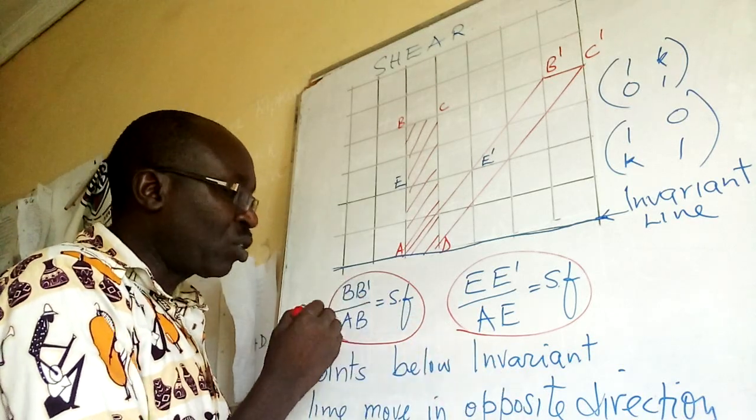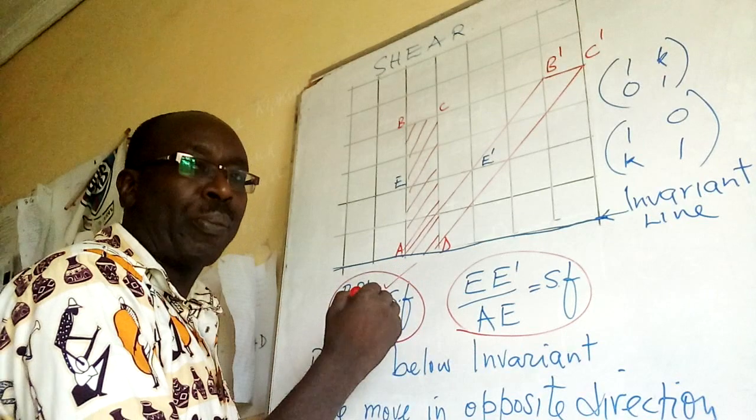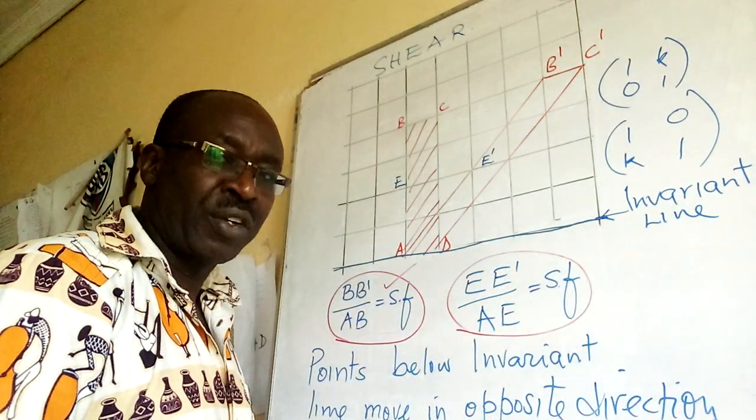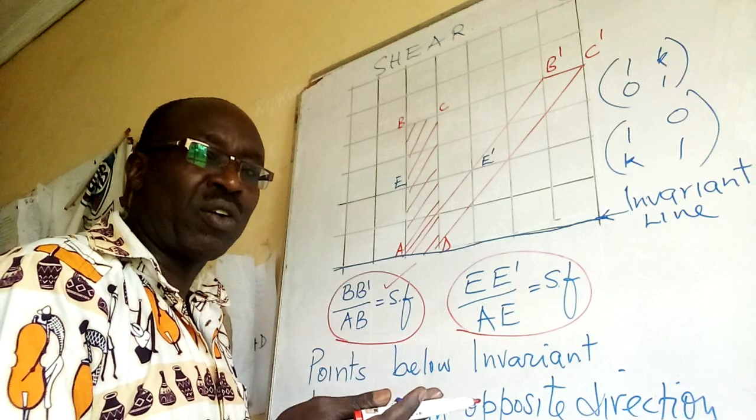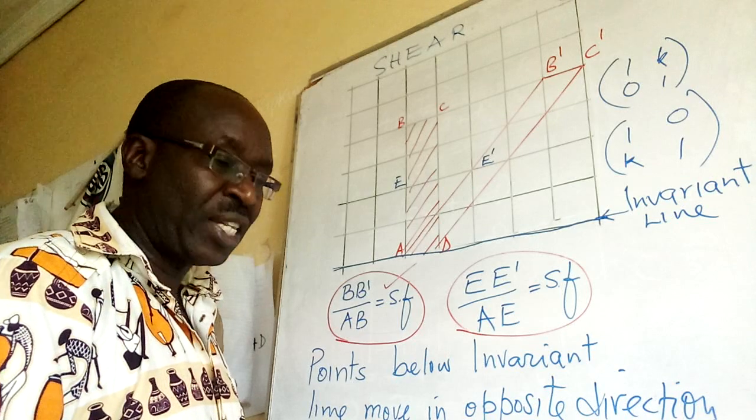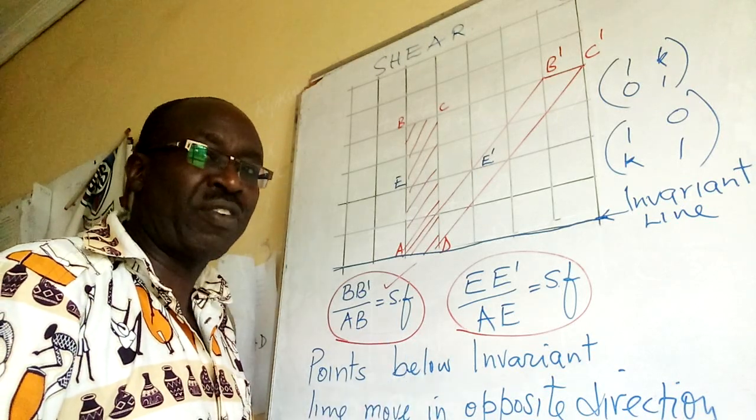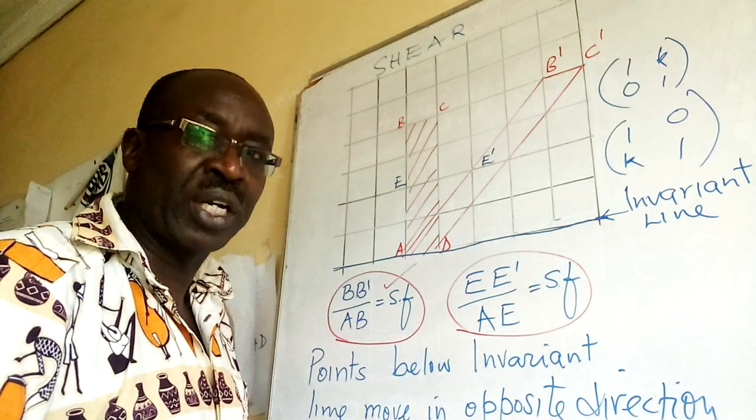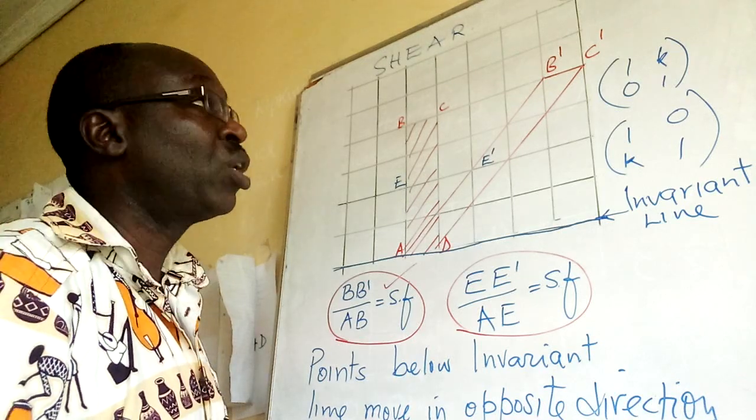So once you know this, then you apply it to other points, taking care that if points are on one side of the invariant line, if they are going to move to the right, then the points below the invariant line will move to the left. So I will show you in a short while in lesson two.